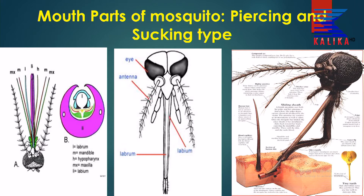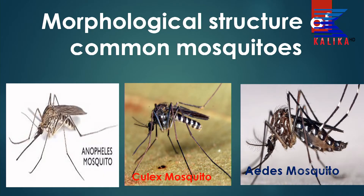In the case of the male, the mouthpart is not as strong and does not pierce and suck blood of human beings or animals, but it sucks nectar and juice of fruit. The morphology of different species includes Anopheles, Culex, and Aedes mosquitoes. There are about 3,000 species of mosquitoes and 100 of them cause disease to us.